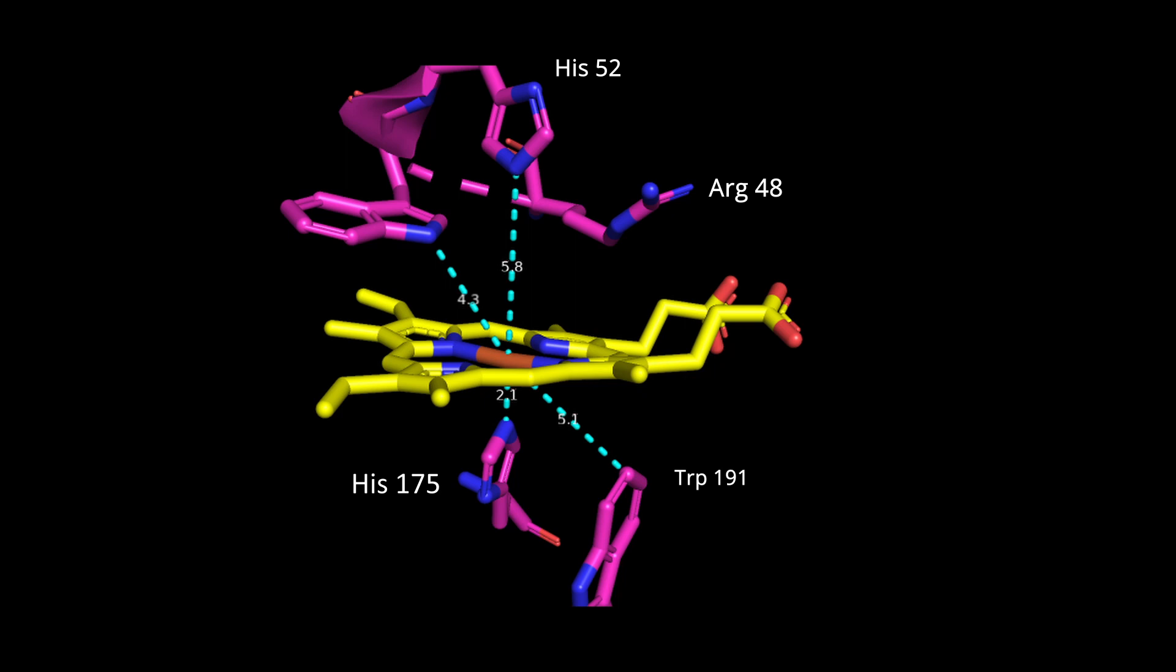In the resting stage, CCP has a distal histidine 52 that is not bound to the heme iron but is intimately involved in catalysis.